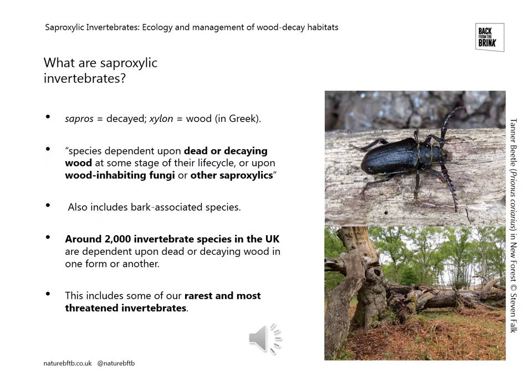The word saproxylic comes from the Greek word sapros, which means decayed, and xylem, which means wood. So saproxylic invertebrates are species that are dependent upon dead or decaying wood at some stage of their life cycle, or dependent upon wood-inhabiting fungi or other saproxylic organisms. It also extends to bark-associated species, and there are around 2,000 invertebrate species in the UK that are considered saproxylic, which includes some of our rarest and most threatened invertebrate species.